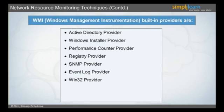Win32 Provider: This provides information about the operating system, computer system, peripheral devices, file systems, and security information. WDM Provider: This supplies low-level driver information of the Windows Driver Model for user input devices, storage devices, network interfaces, and communications ports.